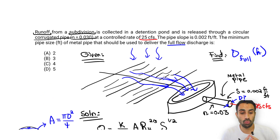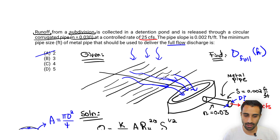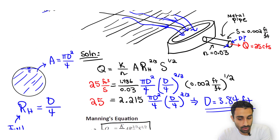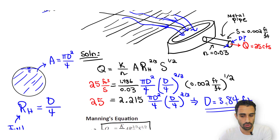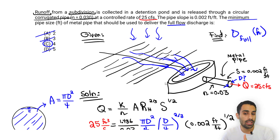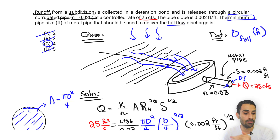Based on the answer choices, we can eliminate A and D immediately. The question is B or C. Our calculated diameter is 3.84 feet. Since 3 feet is below 3.84, it would not deliver the required discharge of 25 CFS — so 3 feet is not acceptable. Anything below 3.84 feet is not good. The minimum pipe size from the answer choices would be C. Note that D would also be safe, but the problem asks for the minimum.